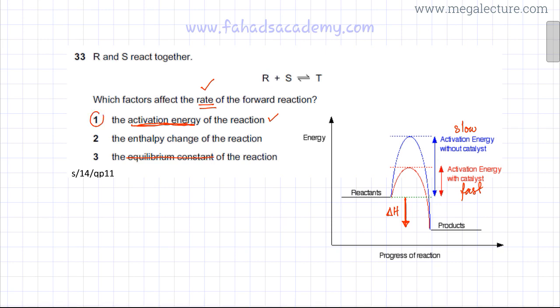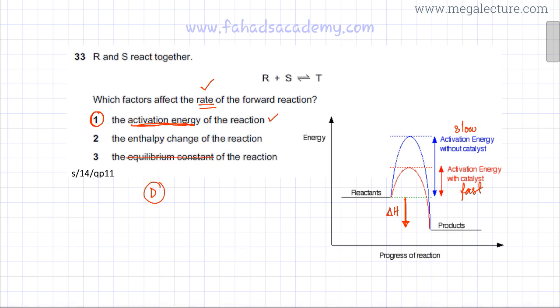So the next two statements are incorrect, and only option one is the correct statement — activation energy is the only factor listed that determines rate. According to the marking key, this would be option D, because only one statement is correct.